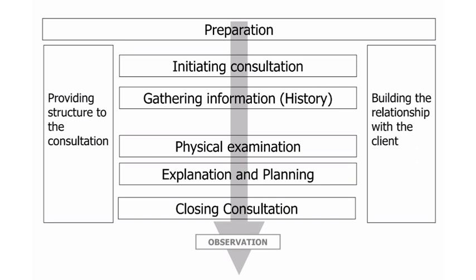The subsequent stage, labeled as the fifth stage, is known as explanation and planning. During this phase, the veterinarian provides a detailed overview of the findings from the clinical examination and incorporates relevant details obtained during the history-taking process. The veterinarian also discusses the subsequent steps, which may involve additional tests or the prescription of medication.